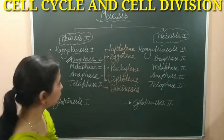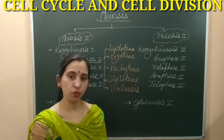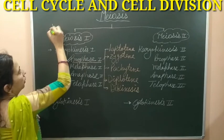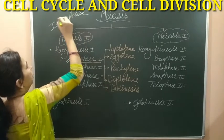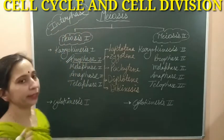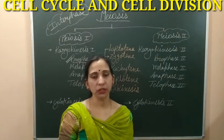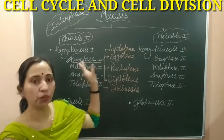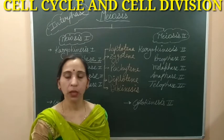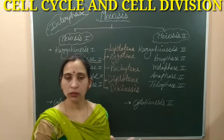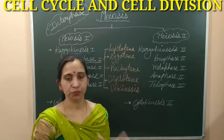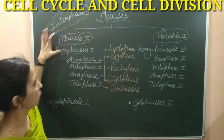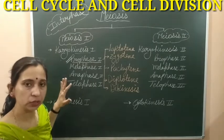Here we need to understand one important thing: when the cell starts any division, before it enters into the M phase, it prepares itself in the interphase — that we all know. Before entering into the meiosis, the cell has completed G1, S, and G2 phases. In the interphase the cell grows, does all the required preparation, and the DNA also gets duplicated before it enters into the meiosis. After that it will do karyokinesis — nucleus division — then cytokinesis.